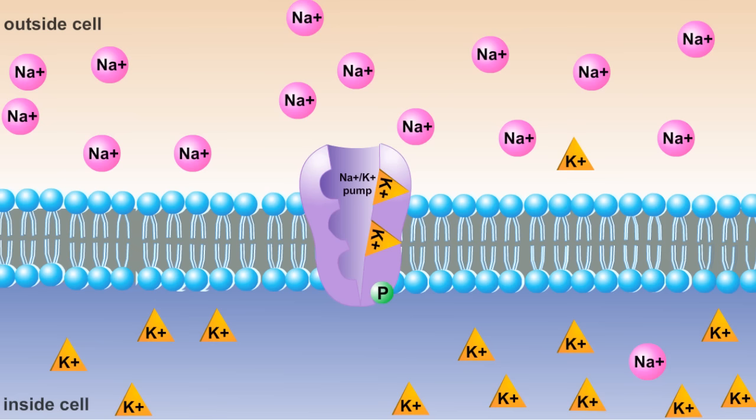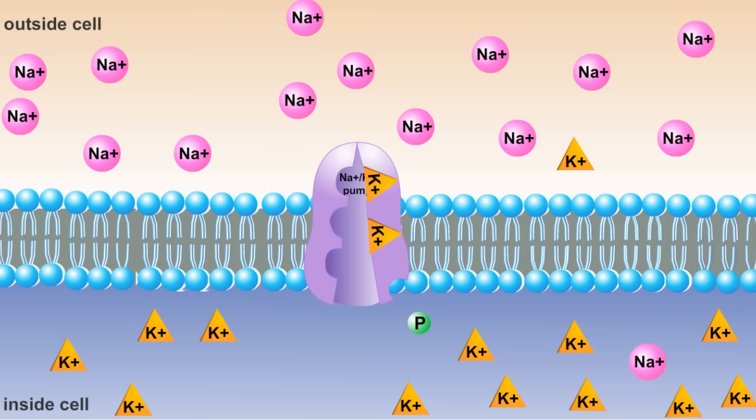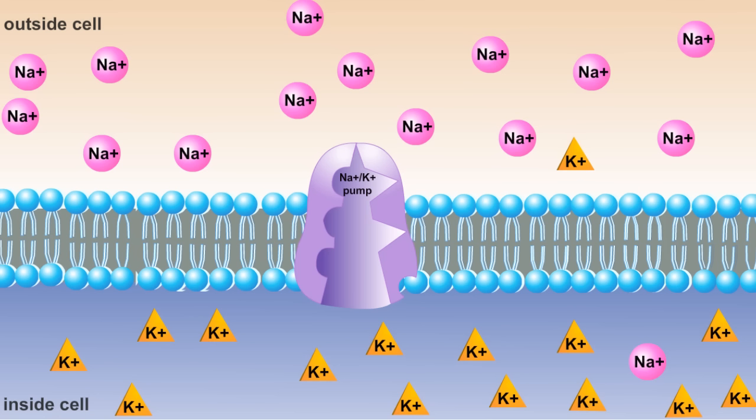Next, two potassium ions position themselves within the carrier protein, causing it to undergo another change in shape. In the process, the phosphate molecule is released. Once the phosphate molecule is released, the carrier protein expels the potassium ions into the interior of the cell.